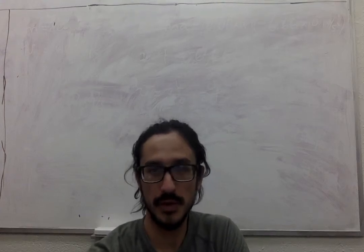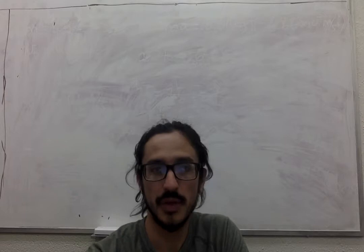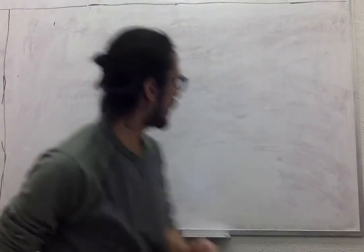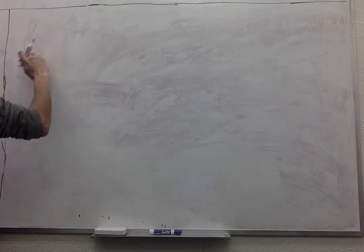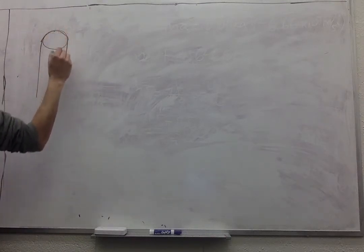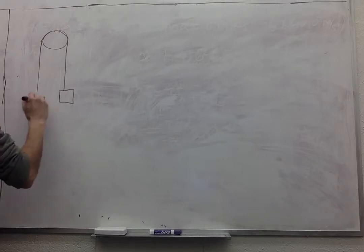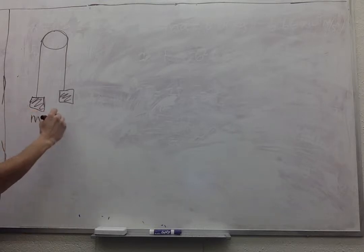So the following problem is about two masses that are suspended from a pulley. And I'm going to draw the figure. We can call this one m and that one capital M, little m capital M.